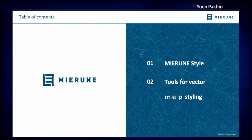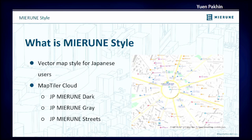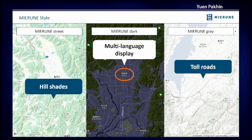Today I'm going to talk about Miye Runet Style, which is a vector map style that we have developed, and also the tools that we have made in order to develop our custom map style. Miye Runet Style is a vector map style originally developed for use in Japan to enhance the user experience of Japanese map users, and it is now available on MapTiler Cloud as JP Miye Runet dark, gray, and streets. This is a sample of the map style that we have developed.